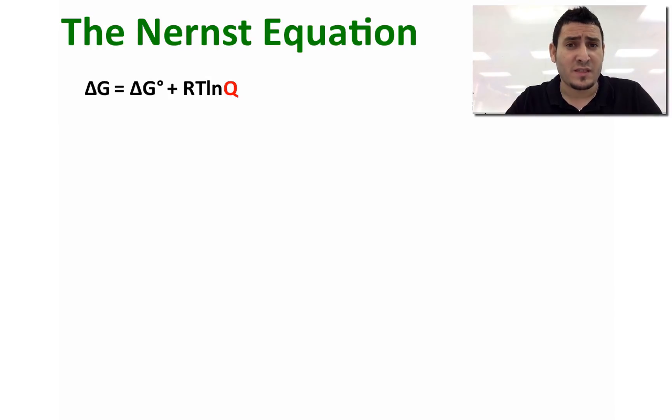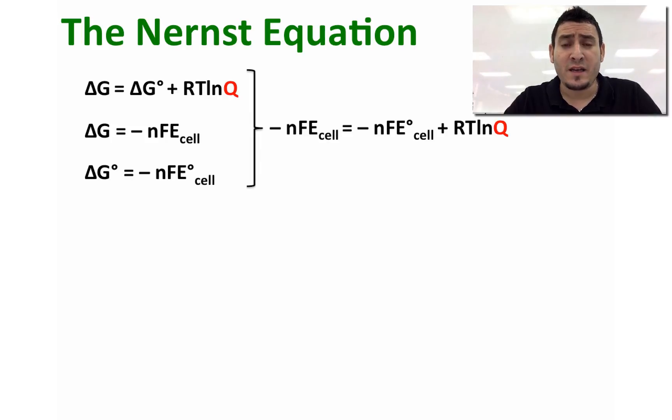And we have discussed previously that the change in free energy is equal to -nFE. The equation then becomes -nFE_cell = -nFE°_cell + RT ln Q. If we divide both sides by -nF, the equation becomes E_cell = E°_cell - (RT/nF) ln Q.